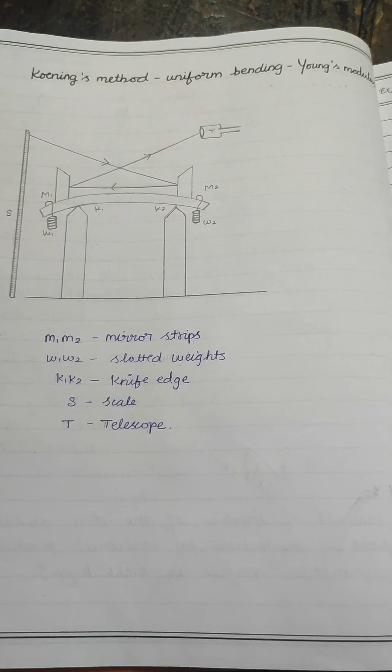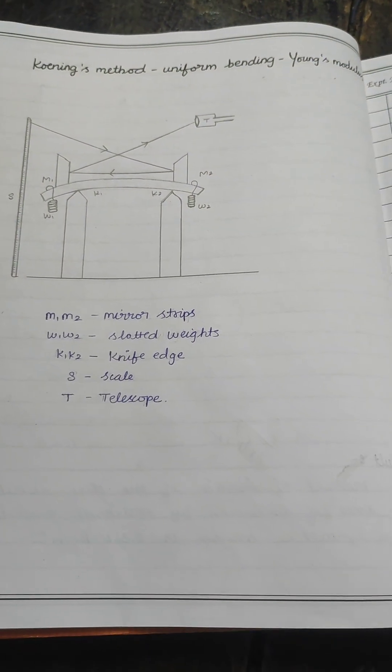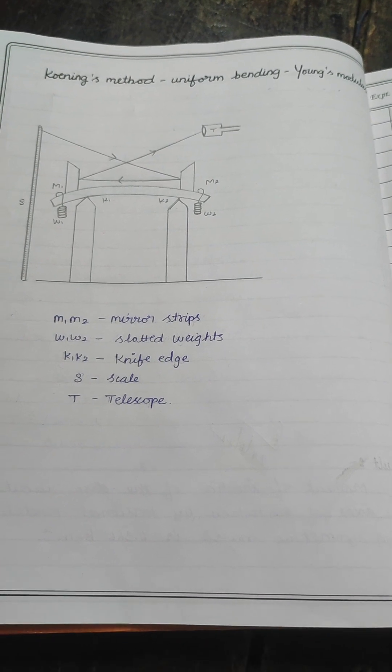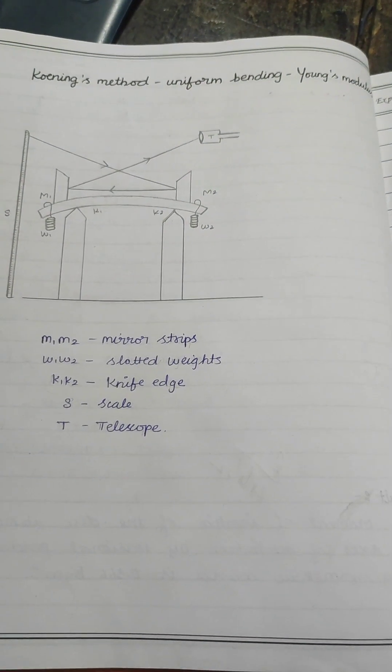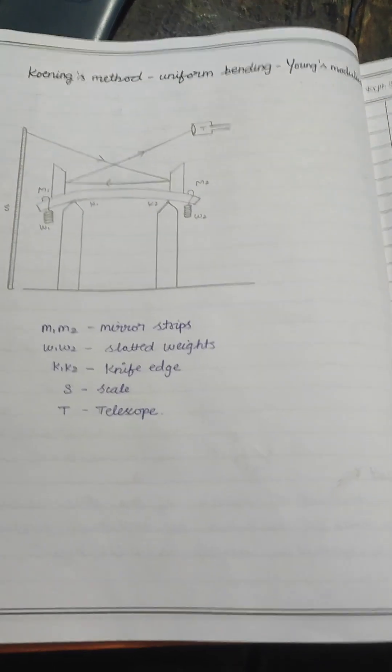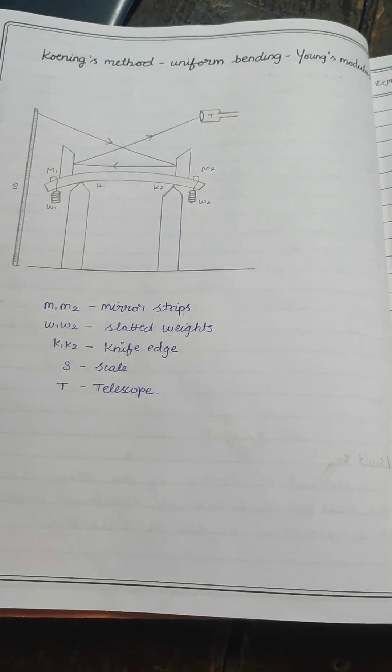The distance between the two knife edges is l, and the distance between the remote mirror and the scale will be taken as k. All these values d, m, g can be taken from the arrangement, and all the values are explained in that formula.